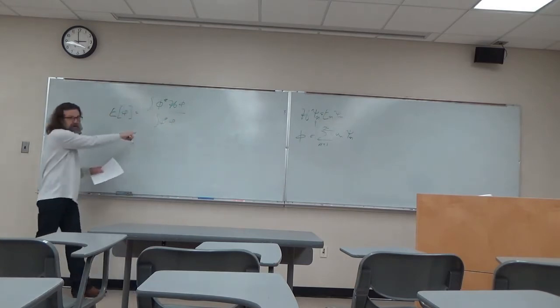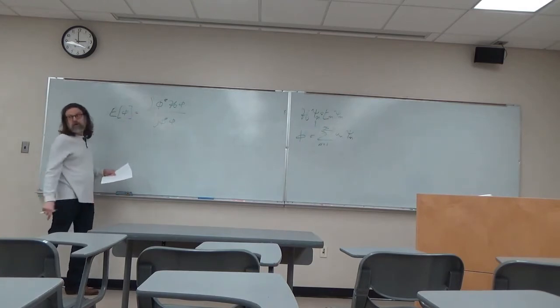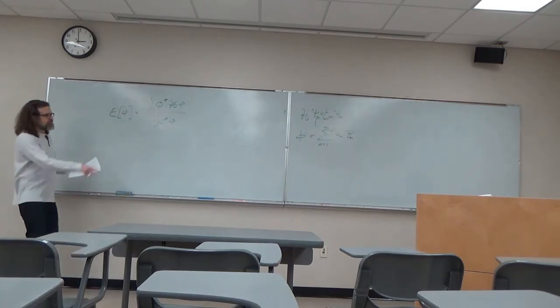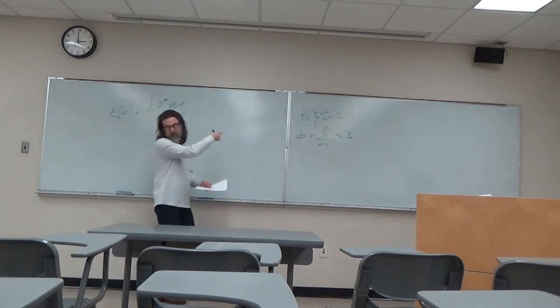So I'm dividing it by the complex conjugate of phi times phi. And this ensures that it's going to be normalized correctly. Because just because we have an arbitrary function doesn't mean that it's properly normalized.